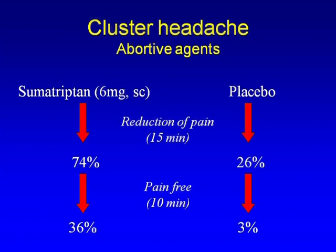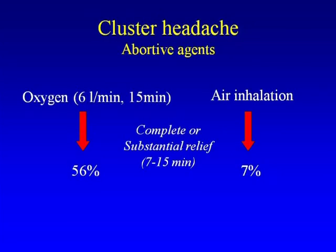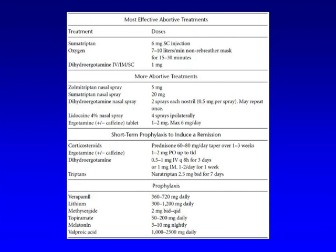For cluster headache, we also divide treatment into abortive and preventive. The drug of choice for acute attacks is sumatriptan injections, which are very effective — studies show 74% of patients have pain reduction within 50 minutes and 36% are pain-free in 10 minutes, versus 3% placebo. Oxygen has also been used — patients can even get oxygen tanks at home — and has been shown effective in a randomized controlled trial. This slide shows the most effective abortive treatments: sumatriptan injections, oxygen, and zolmitriptan nasal spray.